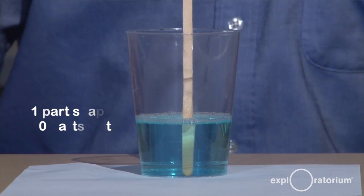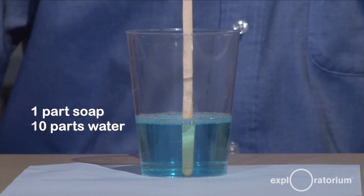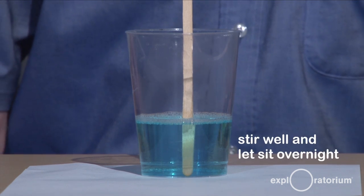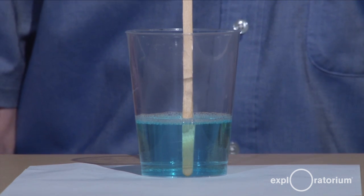First thing you're going to do is to mix one part of the Dawn with 10 parts of distilled water. Stir it up well, and let it sit overnight so that the soap molecules can diffuse throughout the liquid.